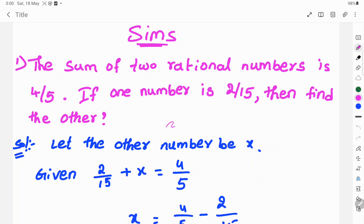Let's see the solution. Here sum of two rational numbers is 4 by 5. So let the other number be x. Given 2 by 15 plus x is equal to 4 by 5 because of sum of two rational numbers.